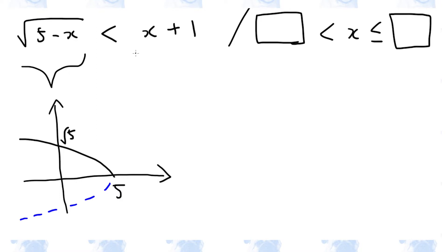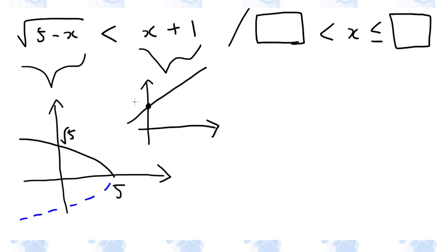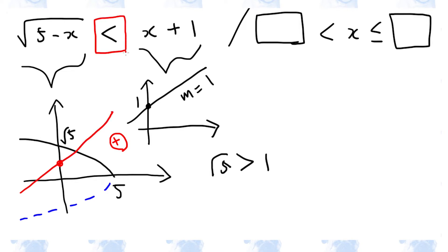The right-hand side of the inequality is simply a straight line with a y-intercept of 1 and a slope of positive 1. Because root 5 is greater than 1, if we combine these two graphs, the y-intercept of the straight line will be below the y-intercept of the half parabola. And the inequality says that the half parabola must be below the straight line.